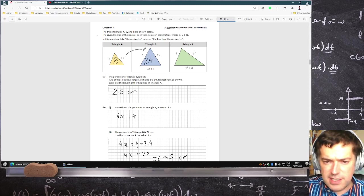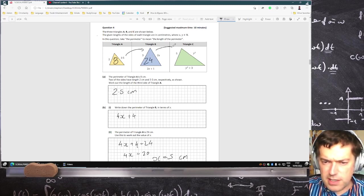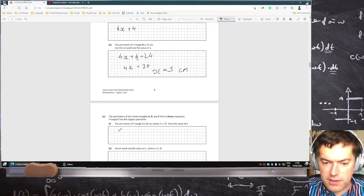So that's a difference of 16. So if it's a linear sequence, the next one will have to have a perimeter of 40 centimeters. Oh, so it's 40 centimeters.